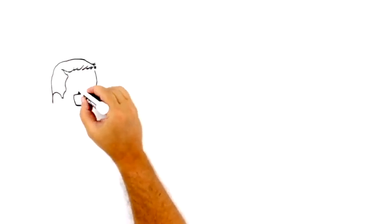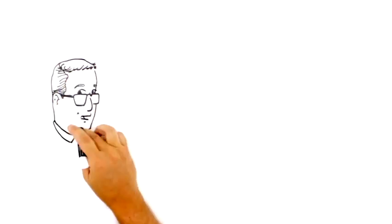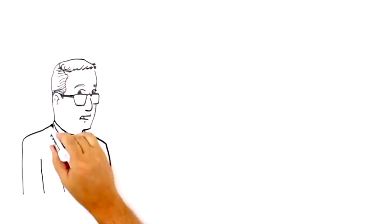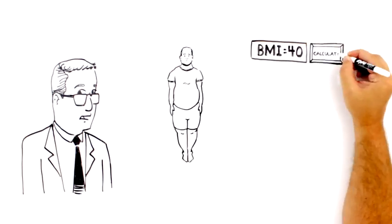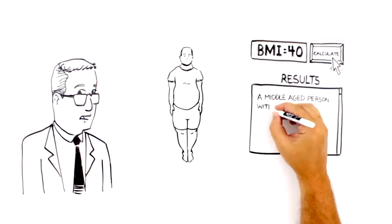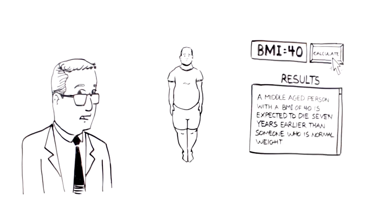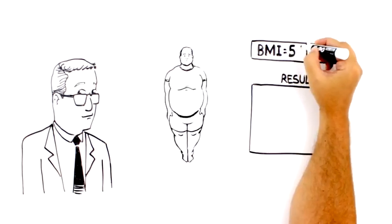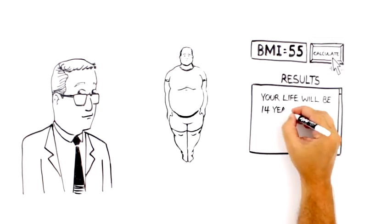Speaking of mortality, we also know that people with obesity have a shorter lifespan than people who are not obese. A middle-aged man with a BMI of 40 is expected to die 7 years earlier than someone who has normal weight. If your BMI is 55, your life will likely be 14 years shorter.